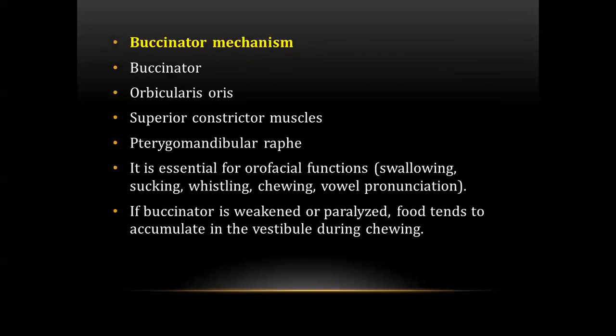The next question was about the buccinator mechanism. The muscles involved are the buccinator, orbicularis oris, superior constrictor muscles, and pterygomandibular raphe. This mechanism is essential for orofacial functions like swallowing, sucking, whistling, chewing, and vowel pronunciation. If the buccinator is weakened or paralyzed, food tends to accumulate in the vestibule during chewing. In the examination, they asked which muscle is involved, and the answer was the superior constrictor muscle.